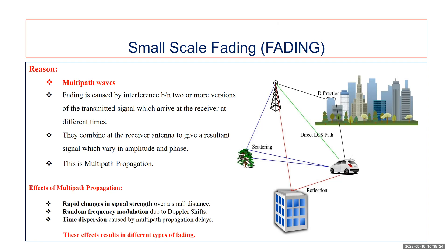This is called multipath propagation. There are three important effects of multipath propagation. One is rapid changes in signal strength over a small distance, due to reflection. The second is random frequency modulation due to varying Doppler shift on different multipath signals. The third is time dispersion, also called echo, caused by multipath propagation delay.